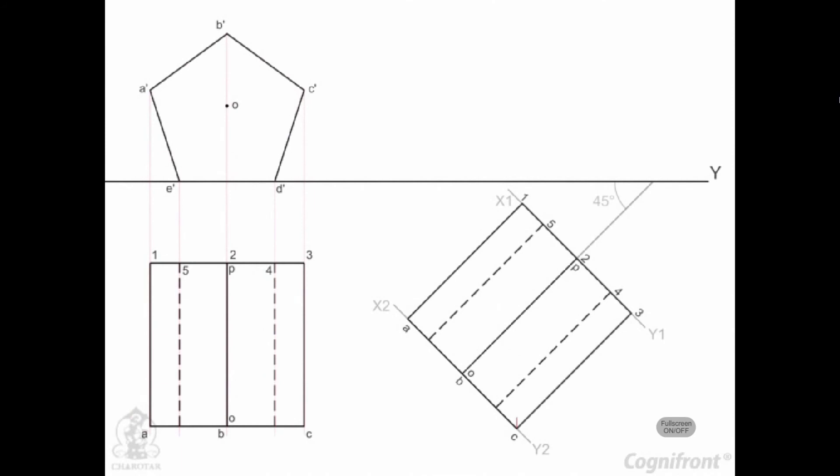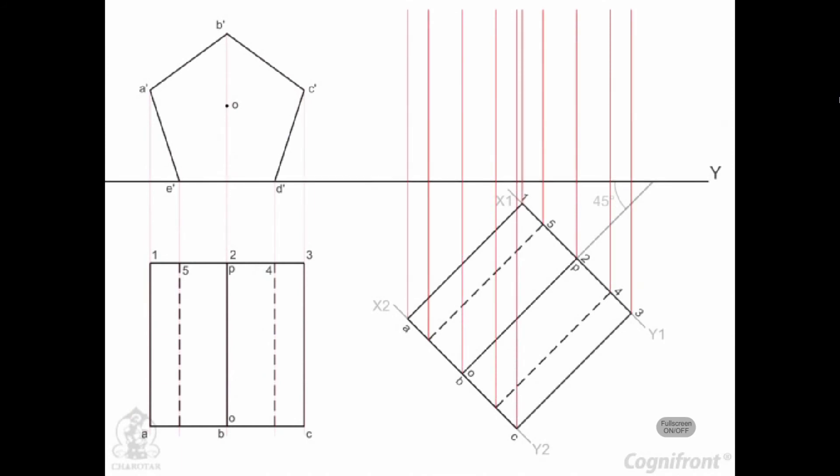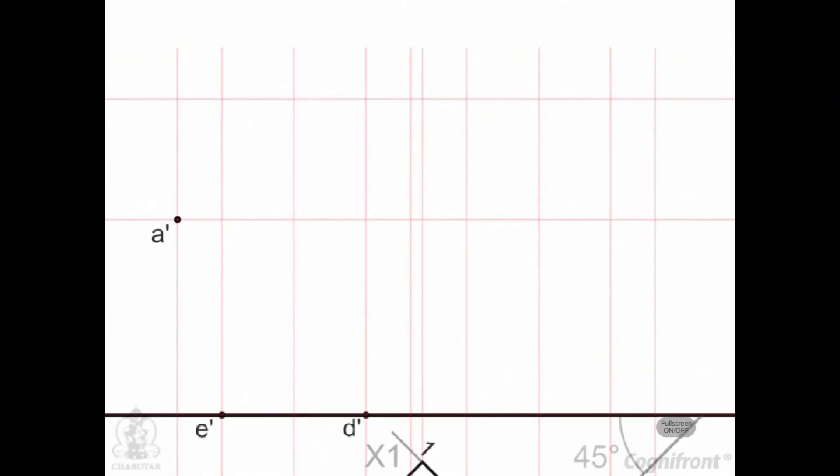Then project all points from this top view above line XY. These projectors will intersect the horizontal projectors drawn from the existing front view. Mark the intersecting points and complete front view in this altered position.